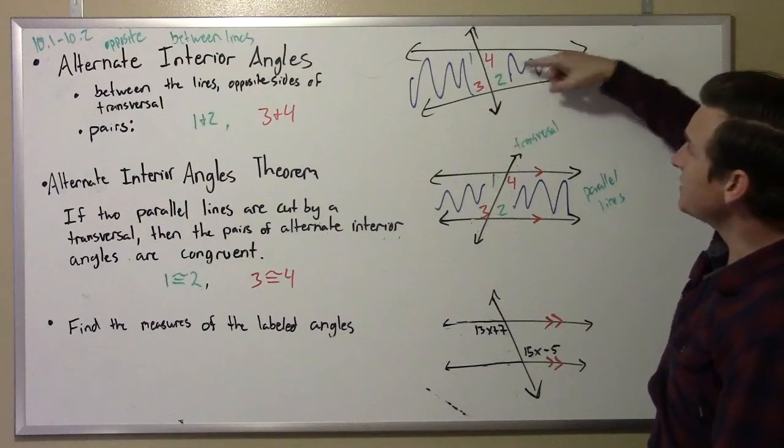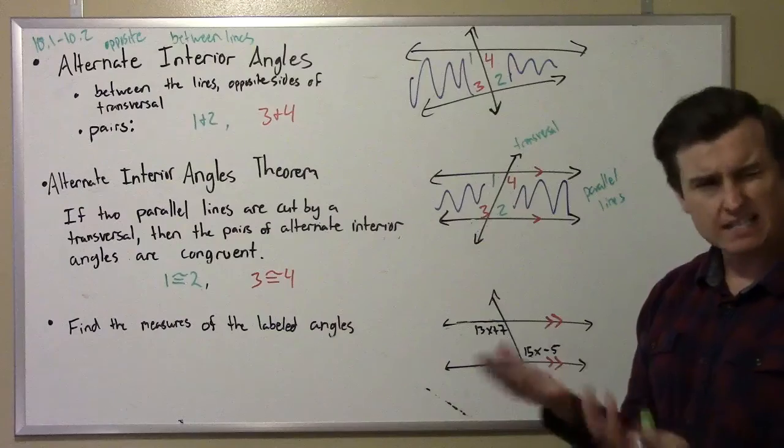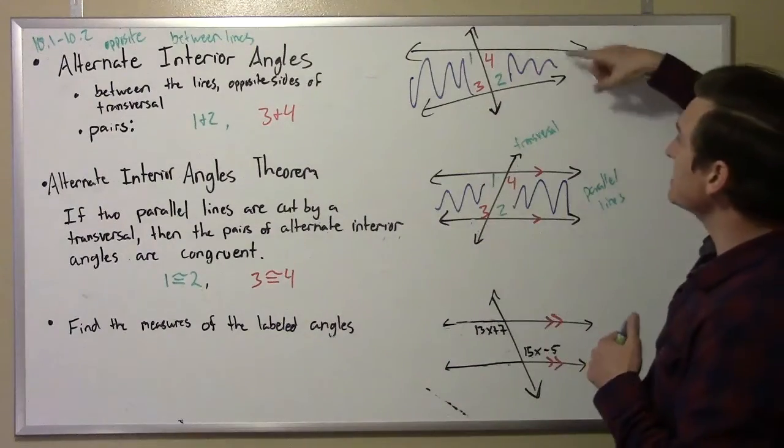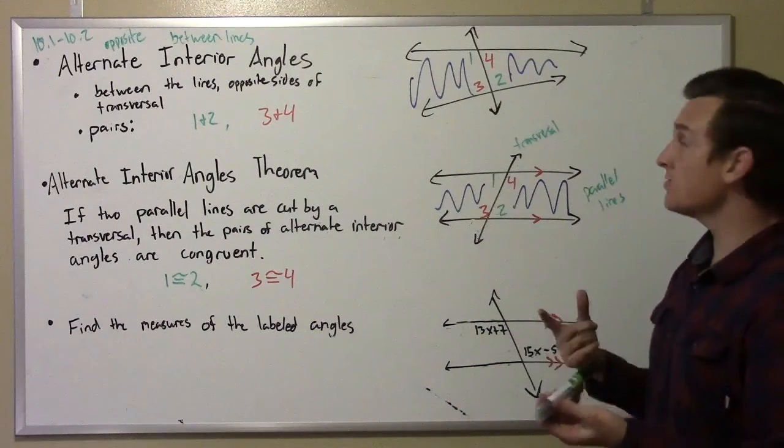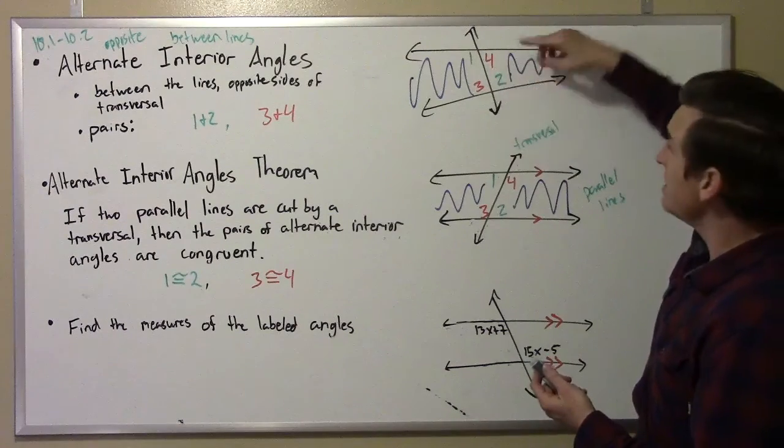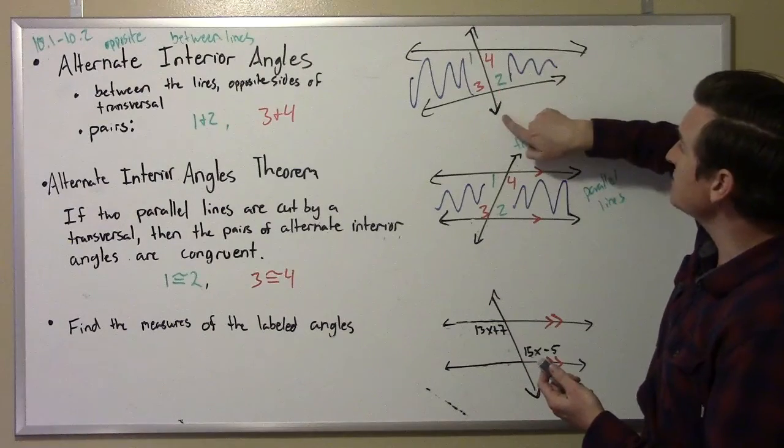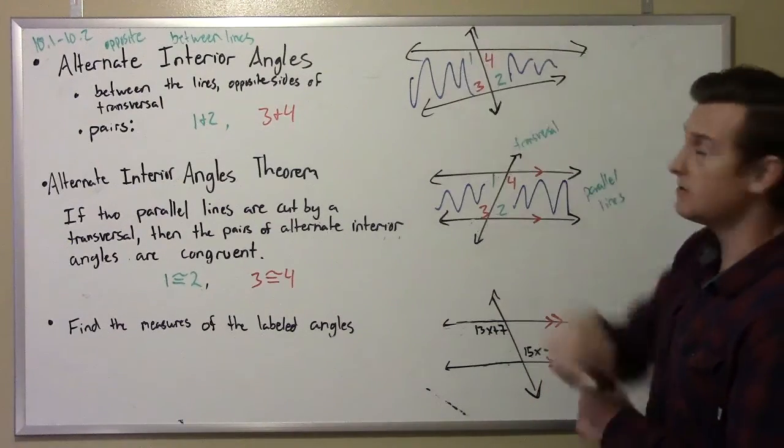I've shaded here in blue the interior between these two lines, because interior means on the inside. So alternate interior means opposite sides of the transversal, but inside the two other lines.